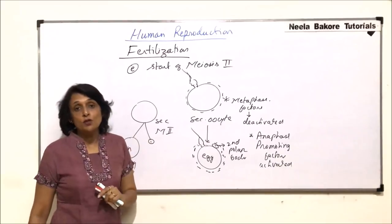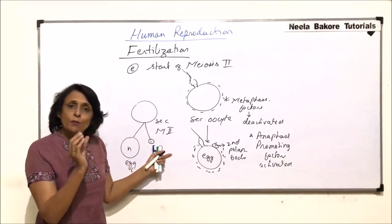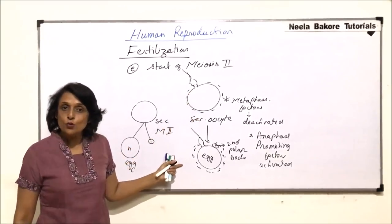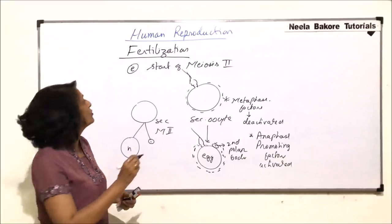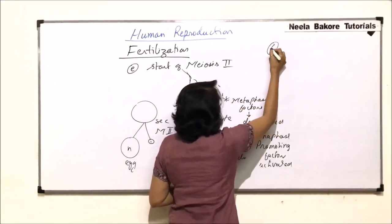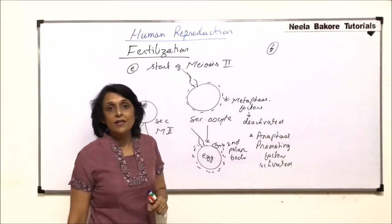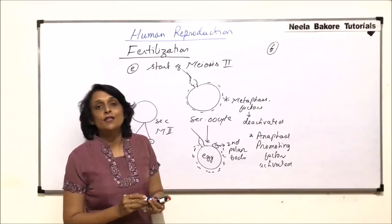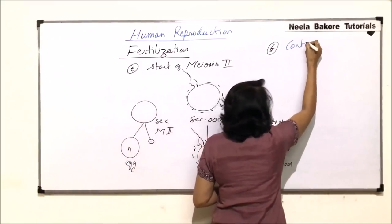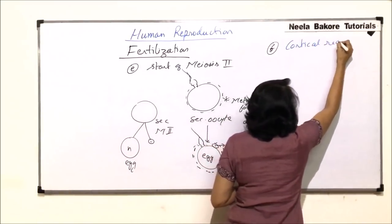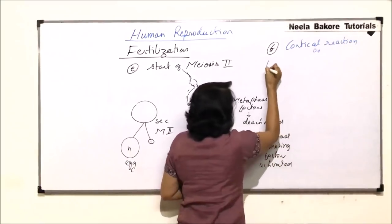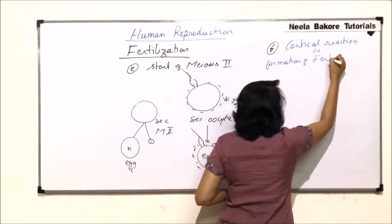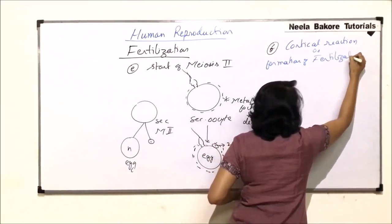The next change takes place pretty much simultaneously. As soon as the sperm touches, meiosis II starts and the next change also starts. This next change is known as the cortical reaction, or it can also be termed as the formation of the fertilization membrane.